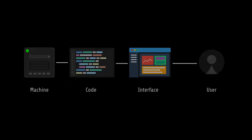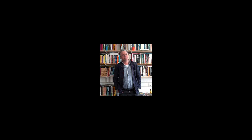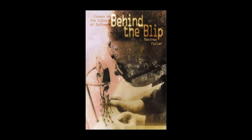What truly defines an interface? Is it just a bridge between a user and a machine, or is it a complex system embedded in every aspect of our interaction with technology? Matthew Fuller, Professor of Cultural Studies at Goldsmiths University, offers an interesting perspective on interfaces. In "The Impossibility of Interface," from his 2003 book of essays "Behind the Blip," he writes about the concept of an interface in our digital world, its meaning and implications.